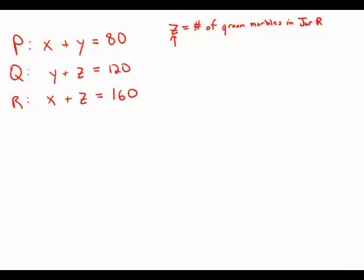I've created these three equations here. x plus y equals 80, y plus z equals 120, and x plus z equals 160. So we have three simultaneous equations with three unknowns.